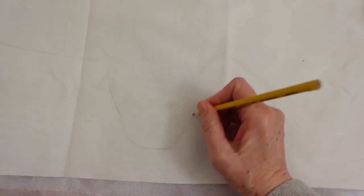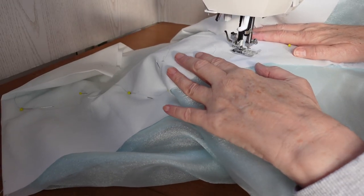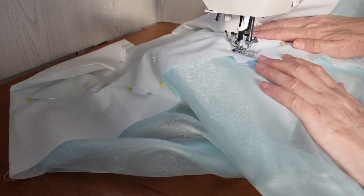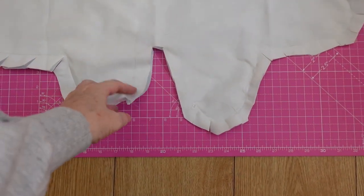Sew on the pencil lines. Cut out leaving a one and a half inch around the edge. Snip all around and place a wire around the outside of the batting and secure with duct tape.